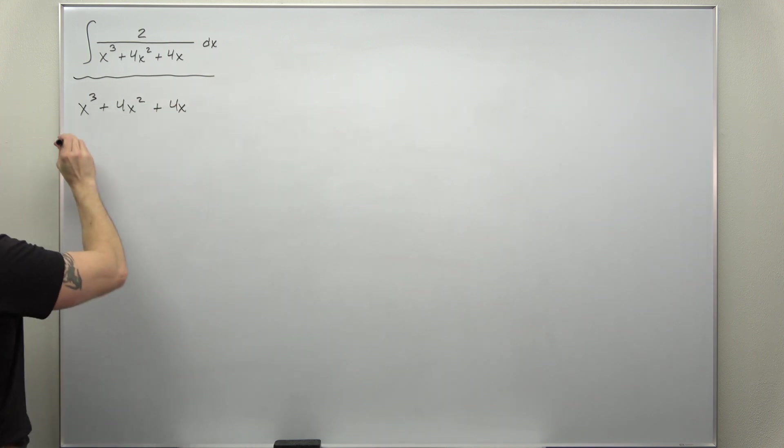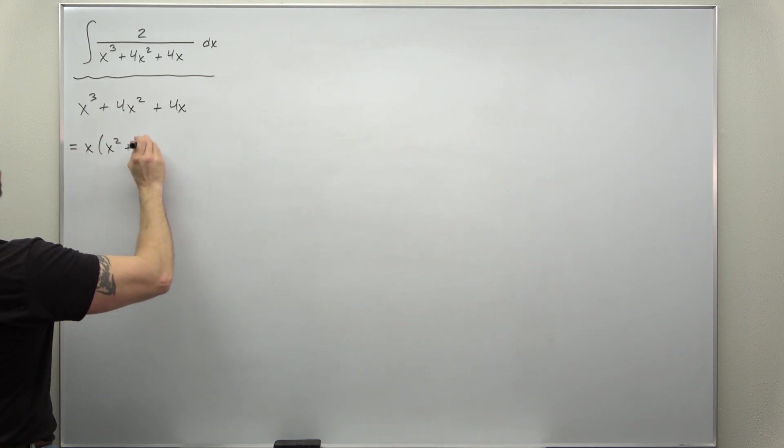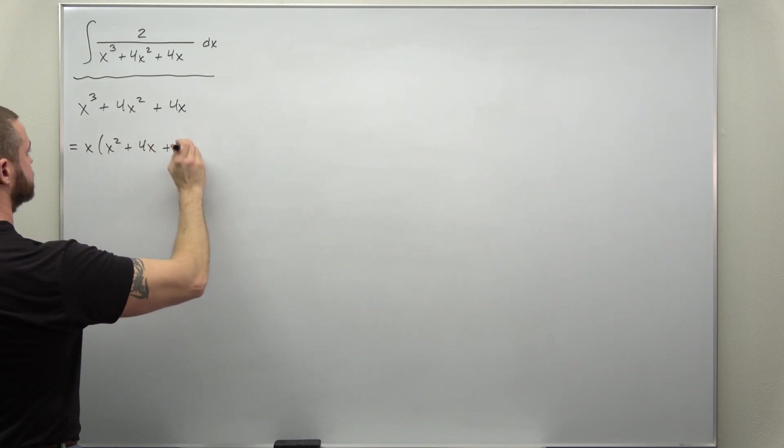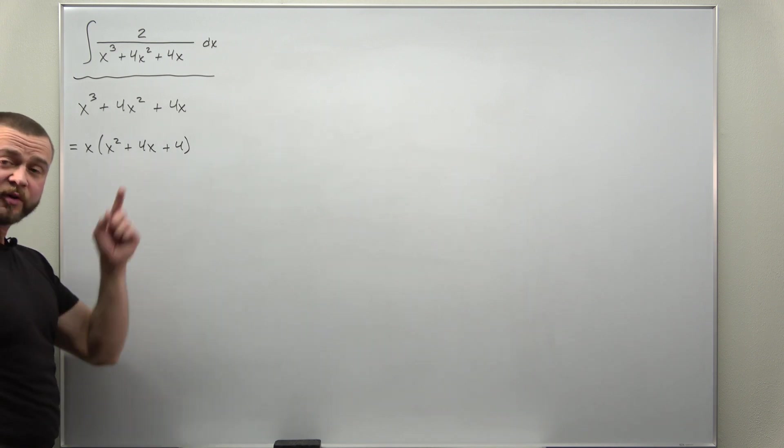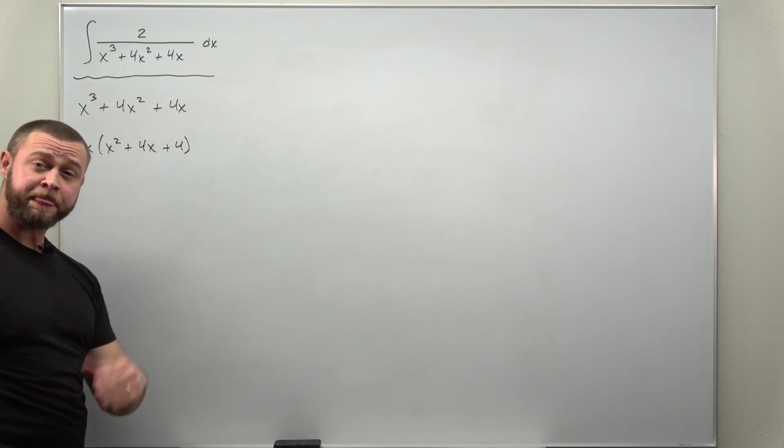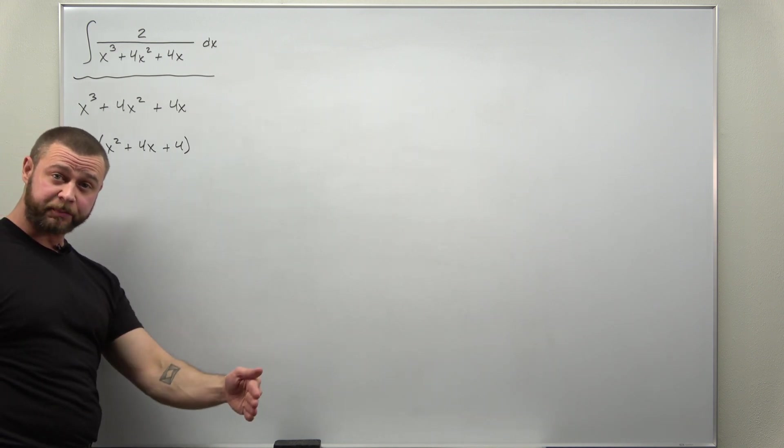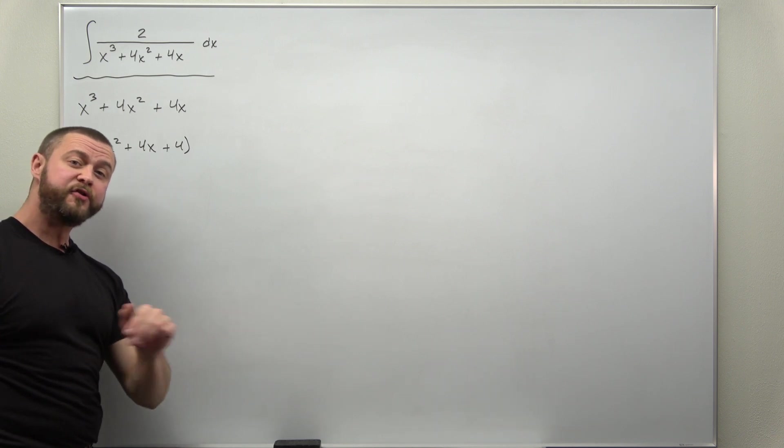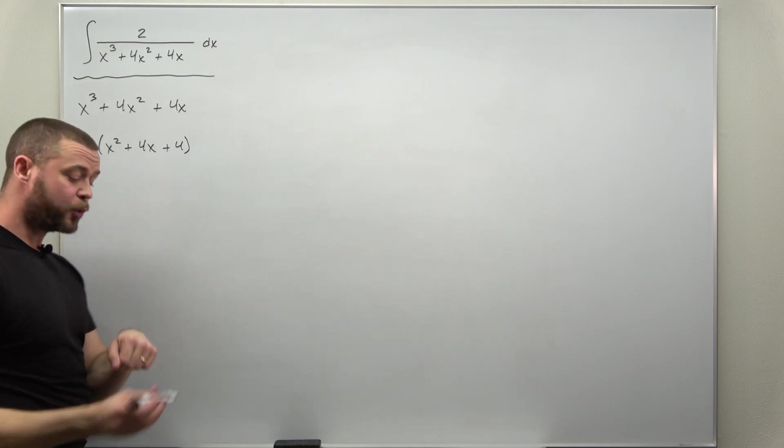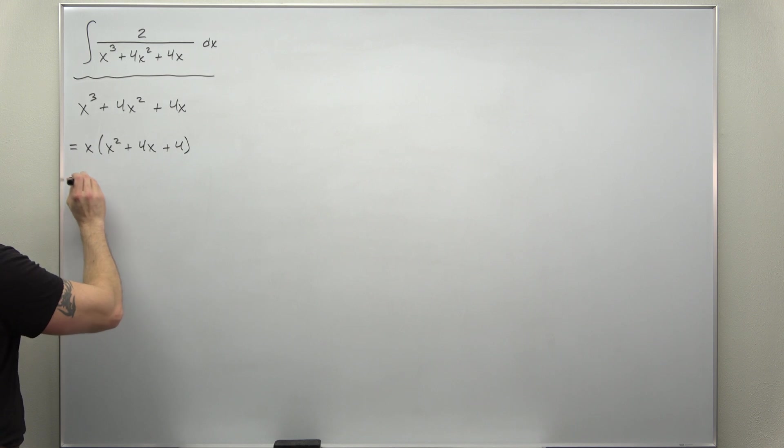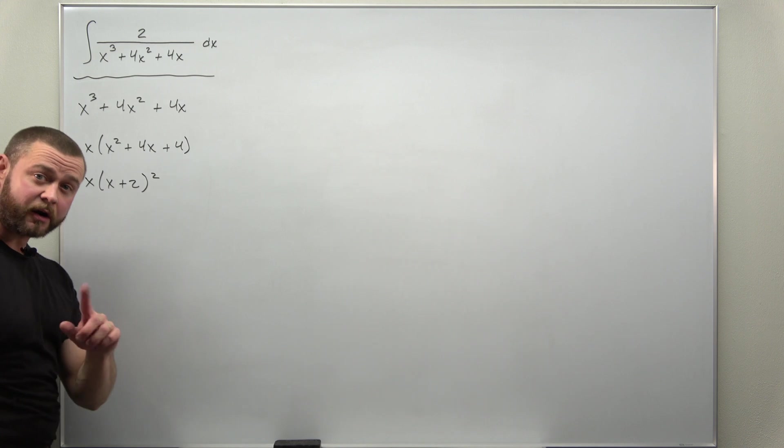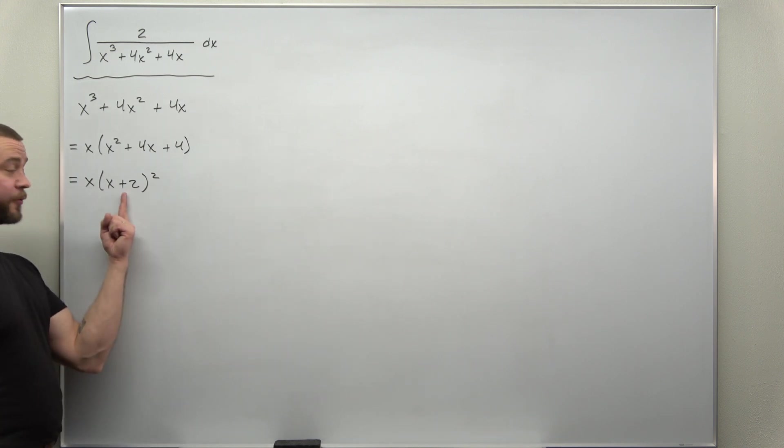So we can factor x out. And the part in parentheses we can factor that further as x plus 2 times x plus 2. Make sure you write that as x plus 2 squared. And that tells us in our denominator we have a repeated linear factor.